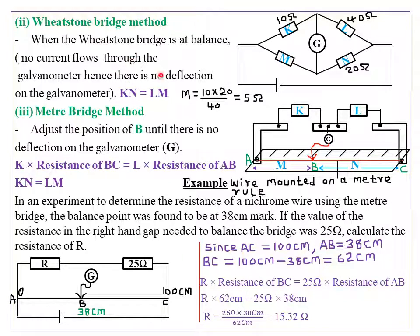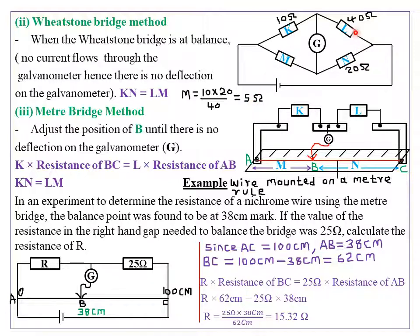At balance, if you take the resistance of resistor K multiplied by the resistance of resistor N, that should equal the resistance of resistor L multiplied by the resistance of resistor M. So: K × N = L × M. For example, if the resistance of K is 10 ohm, L is 40 ohm, and N is 20 ohm, we compute M as: 10 × 20 = 40 × M, giving 200 = 40M, so M = 5 ohm. The resistance of M is 5 ohm.